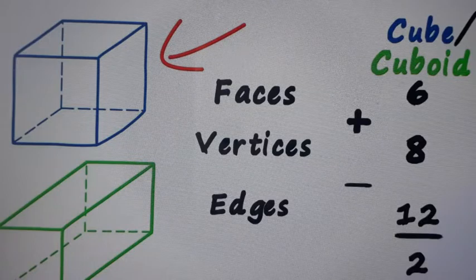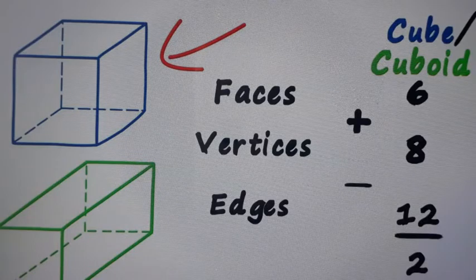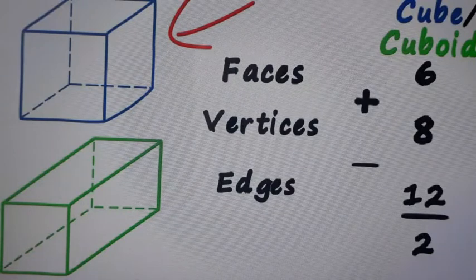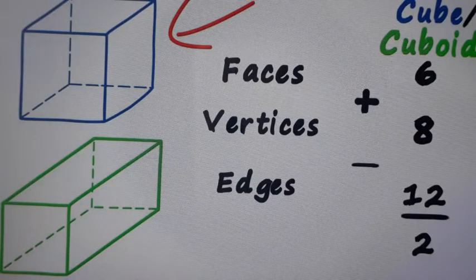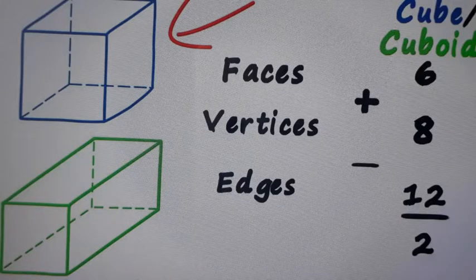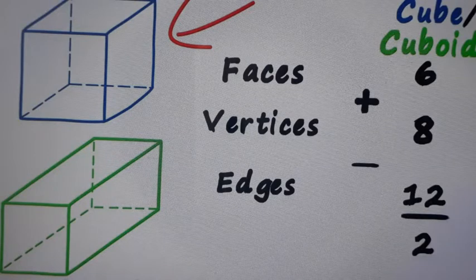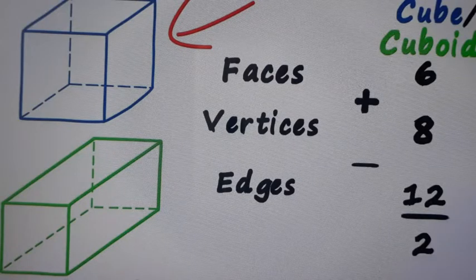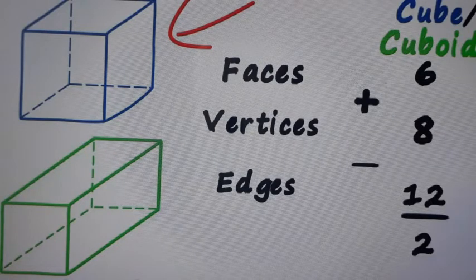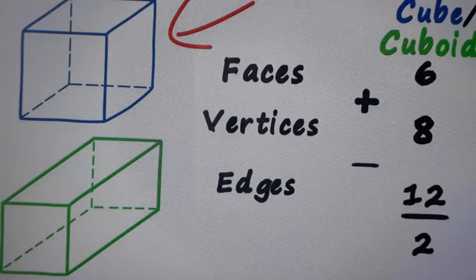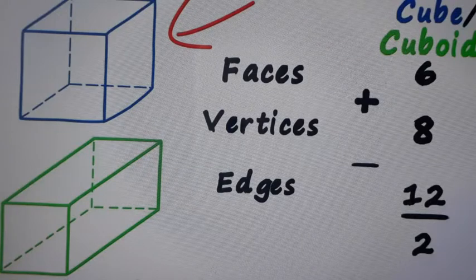And this relationship is called Euler's formula. Same is the case of a cuboid, but length, breadth, and height, all or any two will be different in this case. At least any two. Rest everything is the same: number of faces will be 6, number of vertices will be 8,